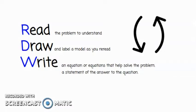Students are introduced to the read, draw, write process for problem solving. Students first read the problem to understand what the problem is about. Then students re-read the problem, trying to represent the problem visually. Students may read and draw and re-read some more. Next, students try to write an equation or equations — if it's a multi-step problem — to help them solve the problem. Finally, they write their answer to the problem in the form of a statement. This helps them to make sure that they've answered what the problem is asking of them.